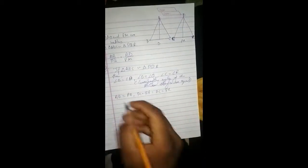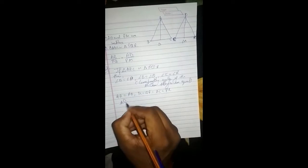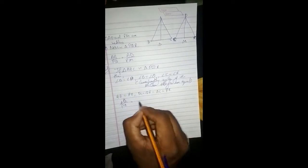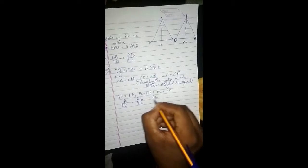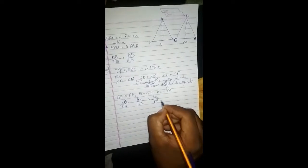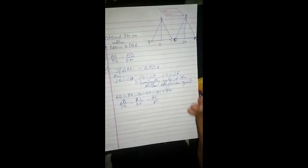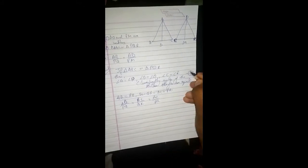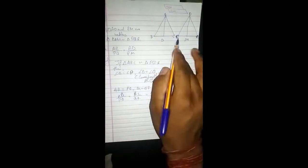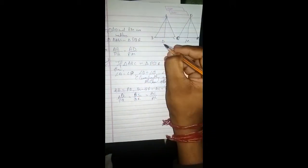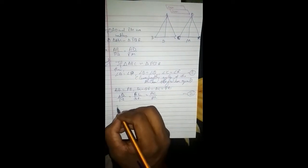We can use this form: AB upon PQ is equal to BC upon QR is equal to AC upon PR. We can say BC upon BD.